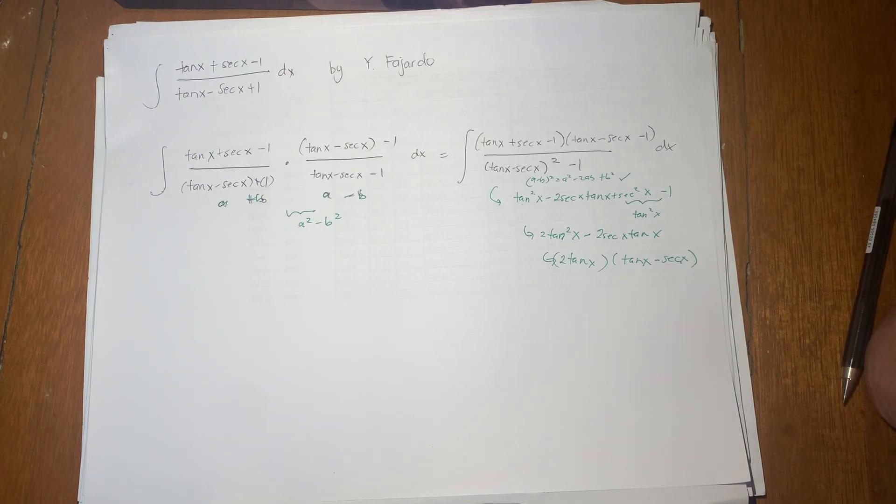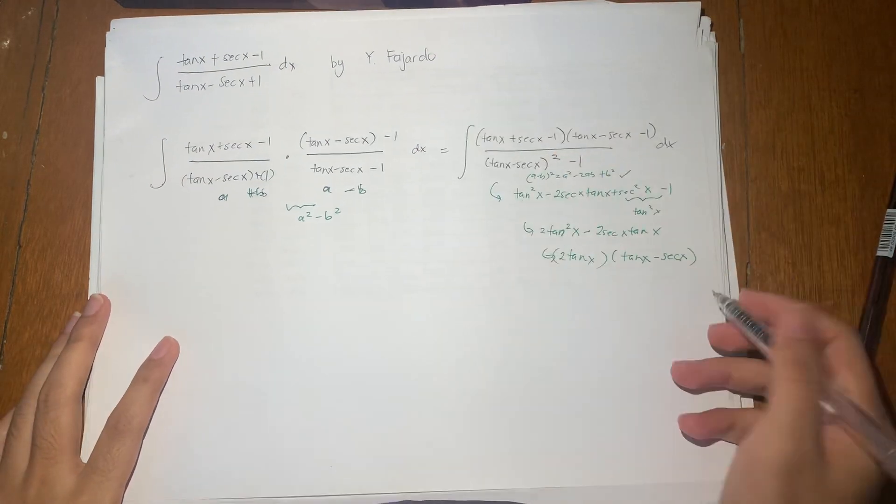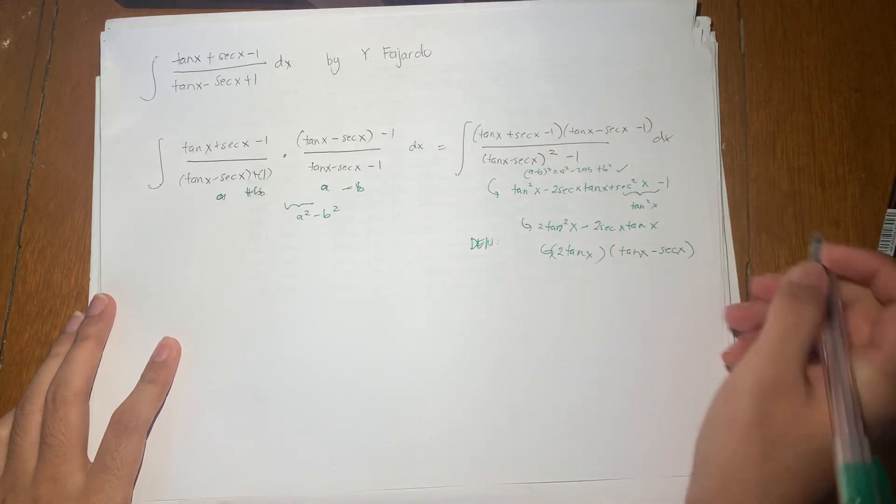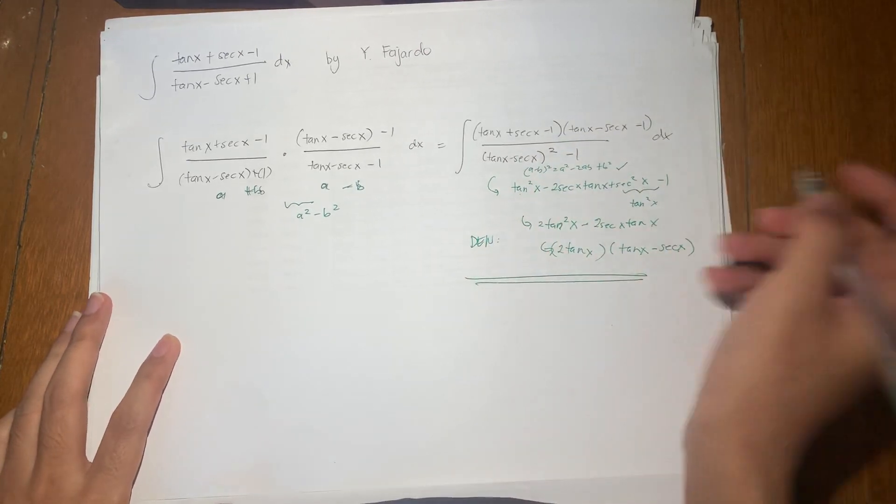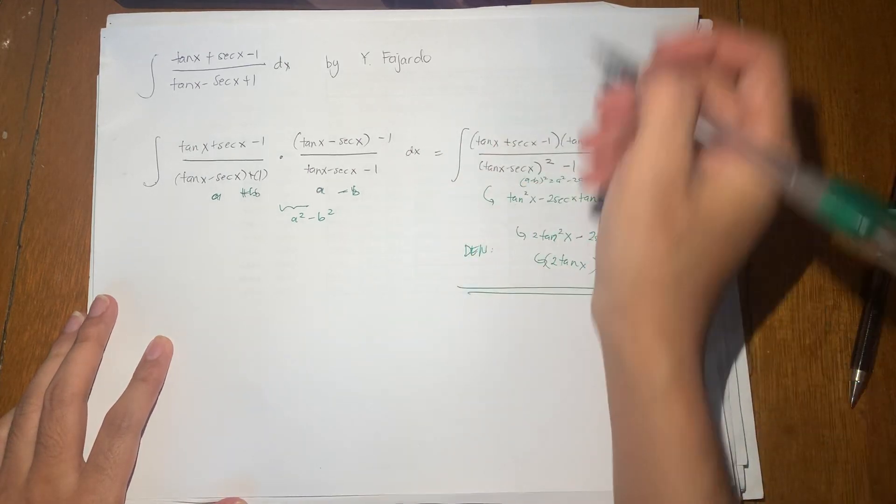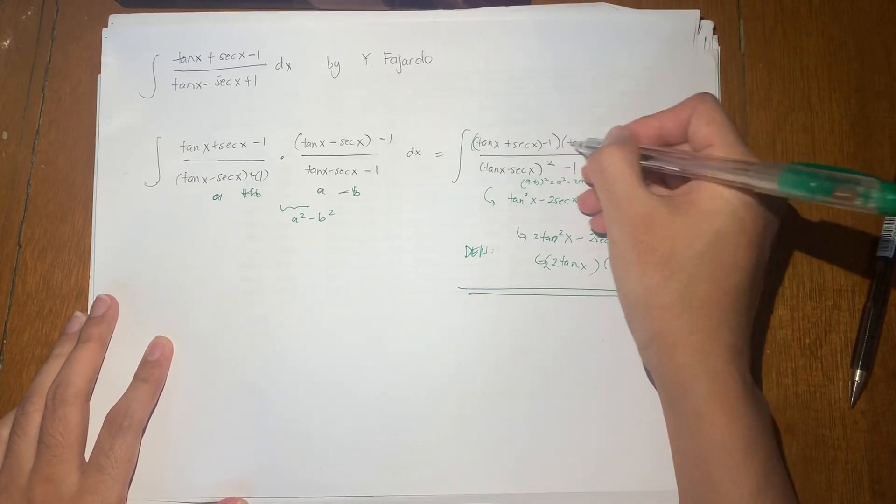Now what we do next is to simplify the numerator. So this is the denominator. Okay, 1 down. The numerator is we expand, and I wanted to expand it by grouping these 2 terms here, here, and here.